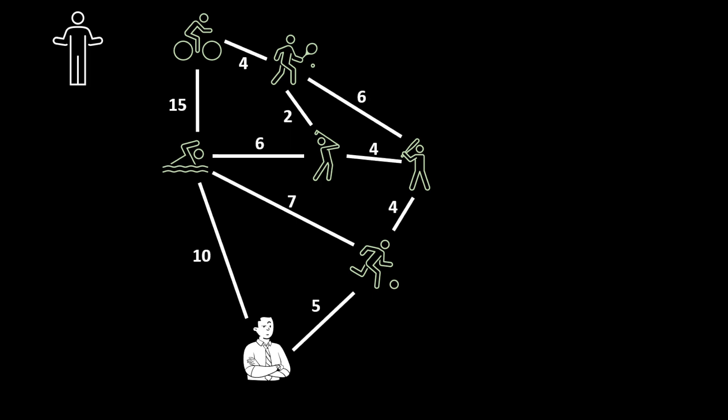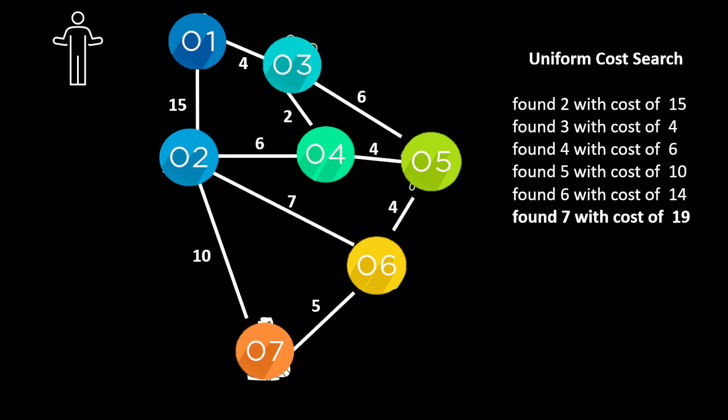Now we have some costs of traveling from one destination to another, or from one node to another. So we can give these places numbers to mark what node they are in this graph. We can use a uniform cost search to find a path that costs 19. So that's a uniform cost search. We can see the path there.